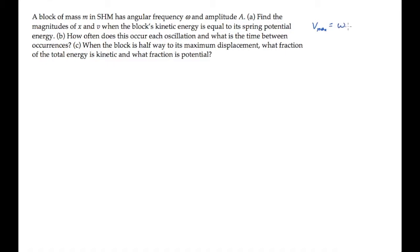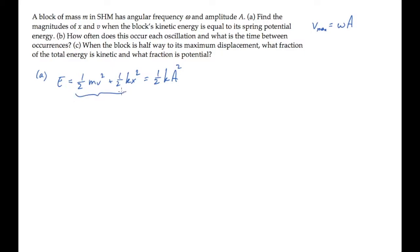The problem statement tells us the angular frequency and the amplitude, so we know what the maximum speed is. We can solve part A by writing down an expression for the block's total energy — the sum of its kinetic and potential energies — and setting that equal to the maximum potential energy. When these two terms are equal, we can write them as twice the instantaneous potential energy, and solving for the magnitude of the position gives us the amplitude over root 2.